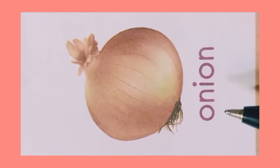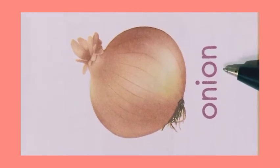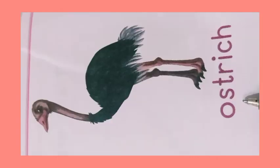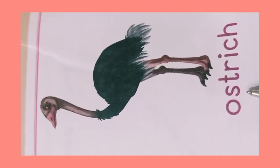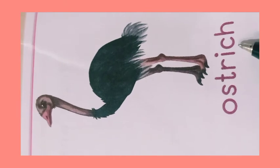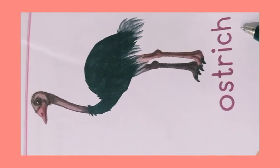O is for onion. O and I, O and onion. And O is for ostrich. O, S, T, R, I, C, H. Ostrich.